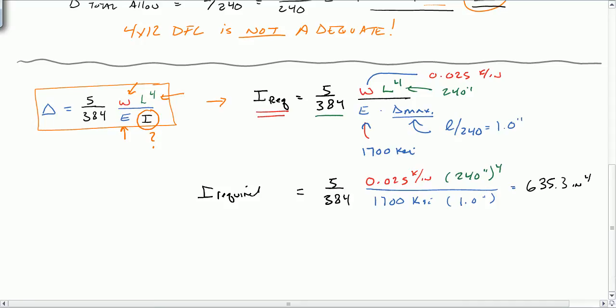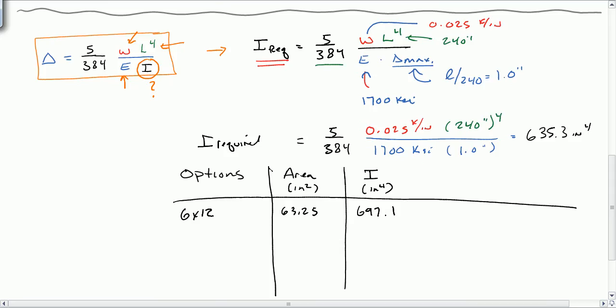So how do we pick a beam from this? We'll go into some tables, and we'll look at some options here. So our first option here is a 6 by 12. I look up its values in the table, and I get 63.25 for its area and 697.1 for a moment of inertia. So 6 by 12 will work. Let's look at some other options. Next option I'm showing here is a 4 by 14. So the cross-sectional area of that is 46.38, and it has a moment of inertia of 678. So that one will work as well.